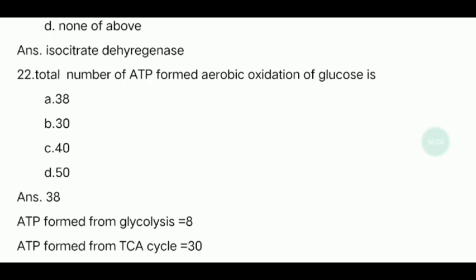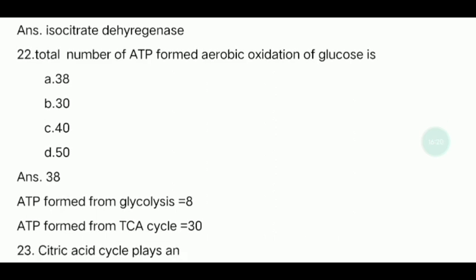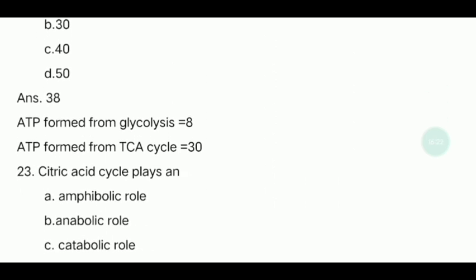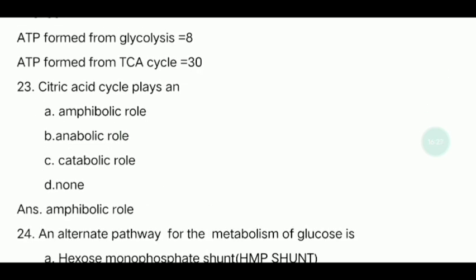Twenty-second question: What is the total number of ATP molecules formed in the aerobic oxidation of glucose? The answer is 38 ATP. From glycolysis, 8 ATP are produced; from the TCA cycle, 30 ATP molecules are produced.